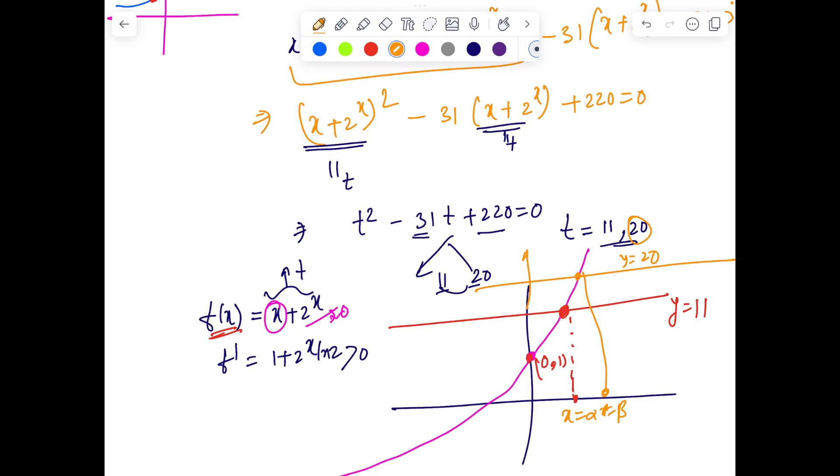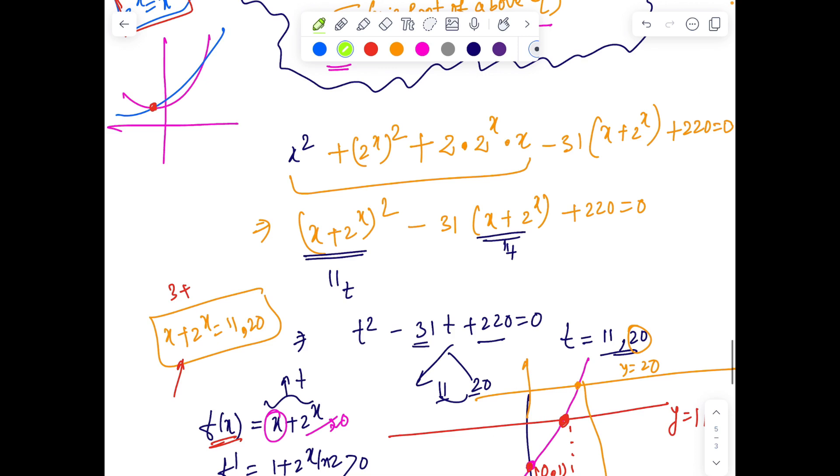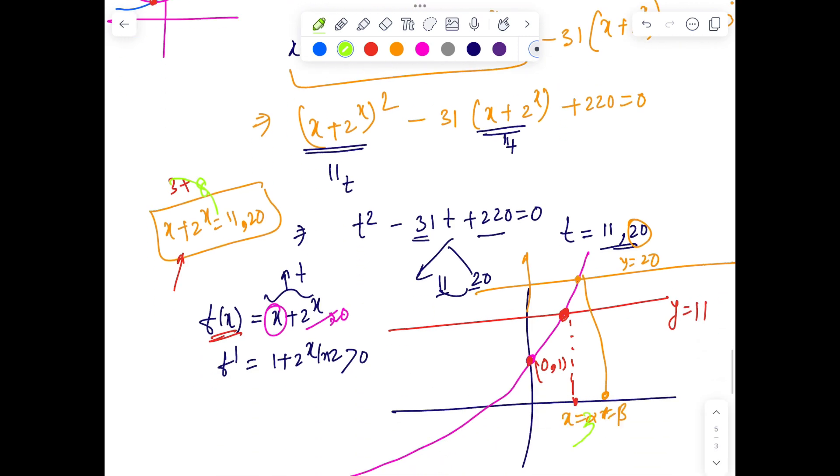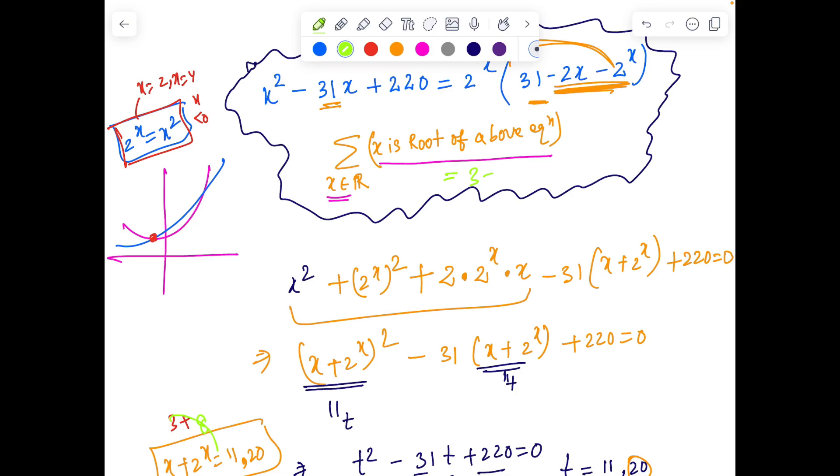But again, it feels like how to solve this. For what value X plus 2 to the power X is going to be 11 or 20? Now that's not very difficult because we can give a trial. Because since the question is asking for the sum, so if X is 2, it's not working. 2 plus 4 is 6. 3 plus 8, yay! We got one of the answers. So one of the answers for this problem is going to be 3. So alpha is 3. What about beta? Let's try with 4. 4 plus 16 is 20. Oh, that's great. So 3 and 4 is the answer.